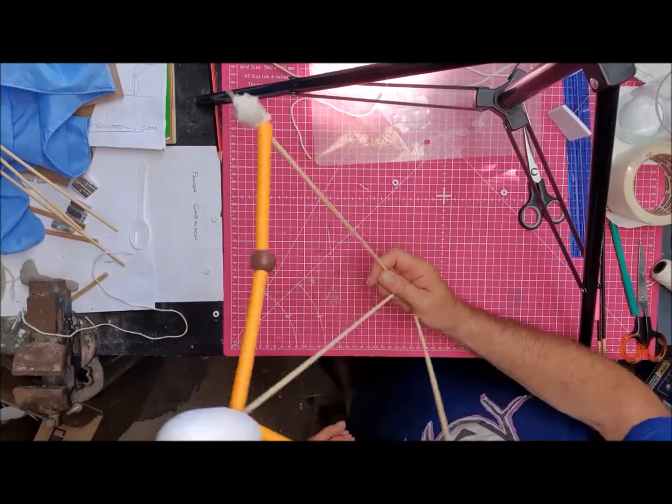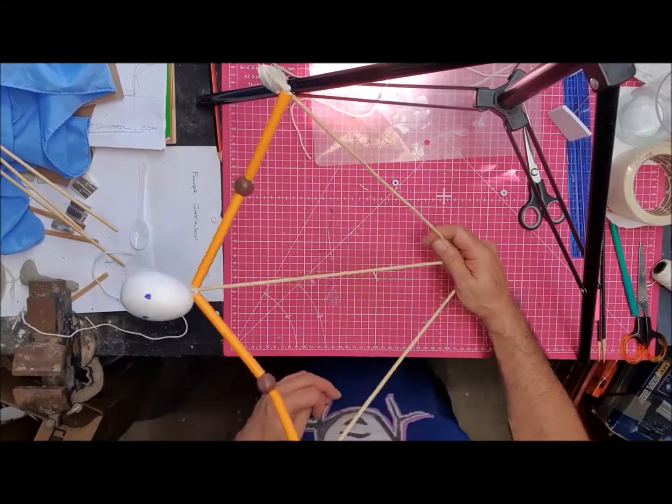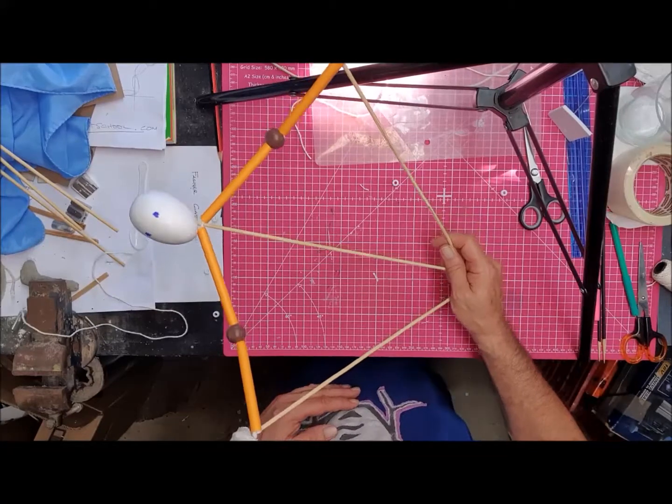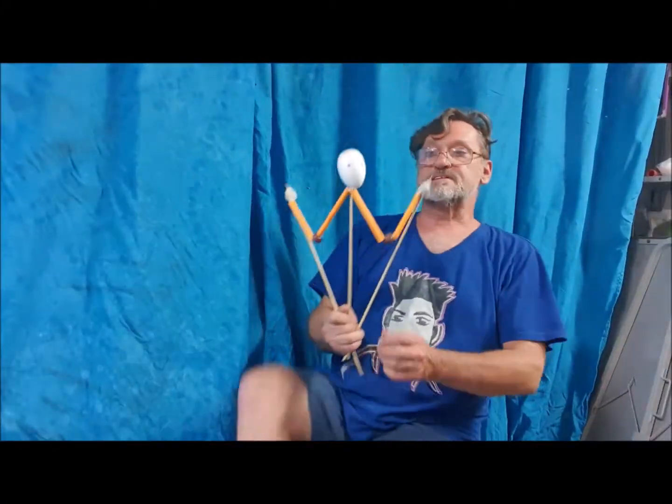So now we've got something with a sense of weight and we've got all three rods together. I'm going to turn the camera and I'm going to move it so you'll be able to see it from the front.